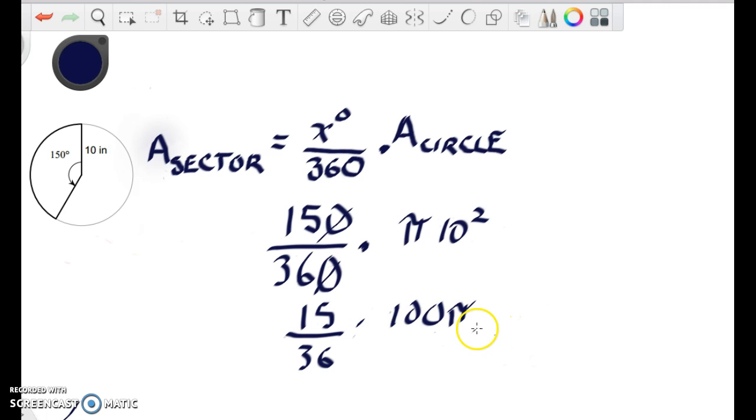and we're going to multiply that, we're going to reduce this, so we get 5 over 12, and we reduce that by 3, and we're going to multiply it by 100 pi, 500 pi over 12,